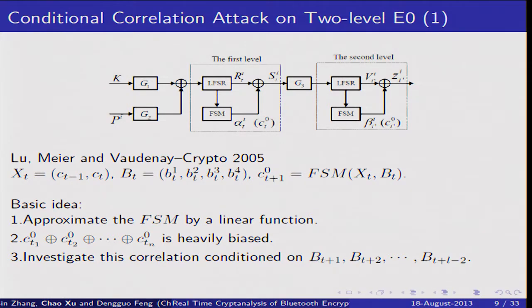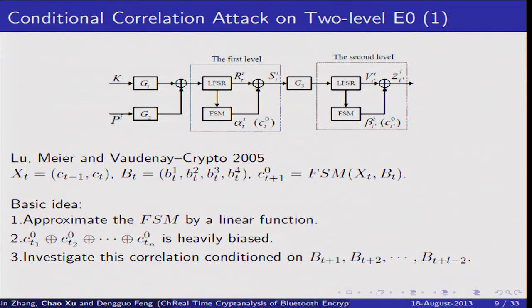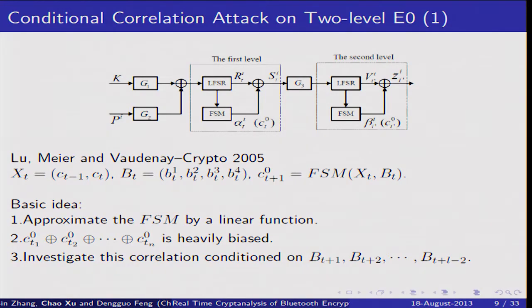I will briefly introduce this attack. Xt denotes the four memory bits of the FSM, and Bt denotes the four-bit output of the LFSR. The output of FSM is computed by Xt and Bt. We can see from the picture that the only nonlinear function is the FSM. So if we approximate the FSM by a linear function, E0 will become a linear system. This gives the basic idea of the attack. First, we approximate the FSM by a linear function. Then we find that the output of FSM at different times is heavily biased. Third, we use conditional correlation to investigate this bias.